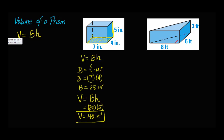Let's do the volume of this triangular prism. Same formula: volume is equal to the area of the base times the height. Notice that the base in this case is not a rectangle — the base or the bottom of this box is a triangle, and we know it's a right triangle. The height is 6 and the base is 8, or I can also say the base is 6 and the height is 8. It doesn't matter.